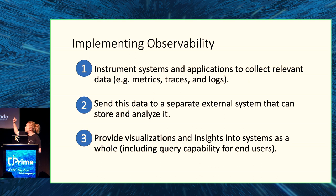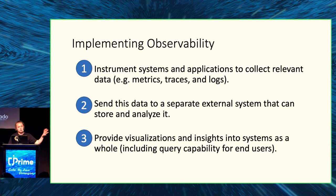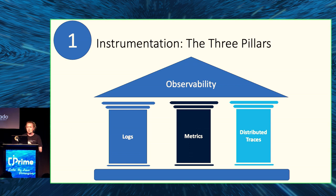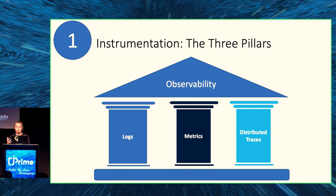We're going to focus mostly on the first step — instrumentation — in this presentation. To make a system observable, it's about these three key pillars, often referred to as the pillars of observability: logs, metrics, and distributed traces. Our code should be emitting all of these. There are also hopes that eventually these pillars will expand — discussions are ongoing about two additional pillars: end user monitoring and profiling.